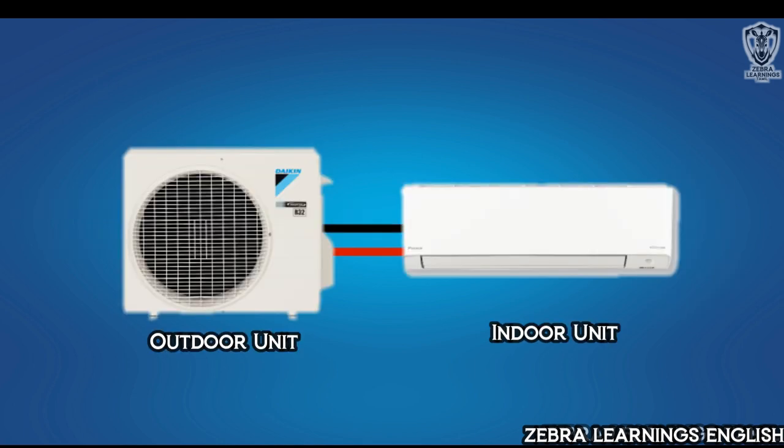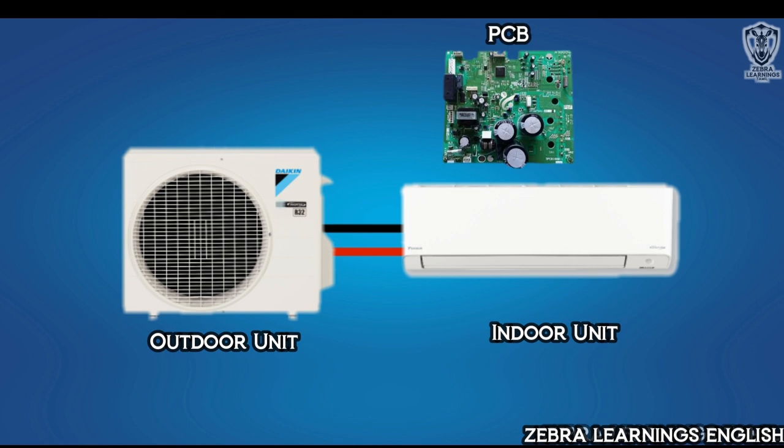In AC, the signal is sent to the outdoor unit through the PCB in the indoor unit. High voltage power cannot be directly supplied to the compressor from the PCB. To avoid such safety issues, we use contactor.